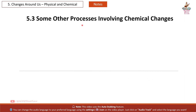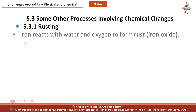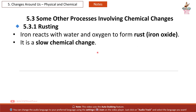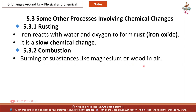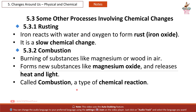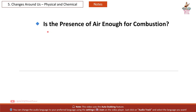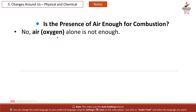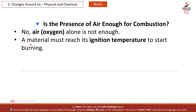Section 5.3: Some Other Processes Involving Chemical Changes. 5.3.1 Rusting: Iron reacts with water and oxygen to form rust (iron oxide). It is a slow chemical change. 5.3.2 Combustion: Burning of substances like magnesium or wood in air forms new substances like magnesium oxide and releases heat and light — called combustion, a type of chemical reaction. Is the presence of air enough for combustion? No — air, i.e. oxygen, alone is not enough. A material must reach its ignition temperature to start burning.